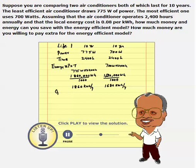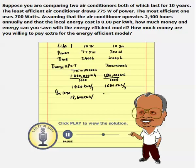So in 10 years, the energy consumption of the less efficient unit is 18,600 kilowatt-hours — this is simply the yearly consumption multiplied by 10 years. And for the more efficient one, it would be 1,680 multiplied by 10, which gives 16,800 kilowatt-hours.